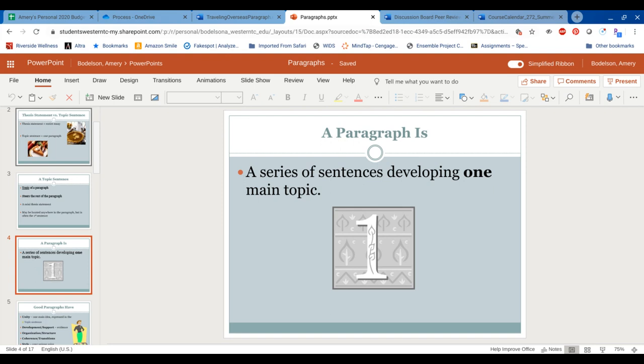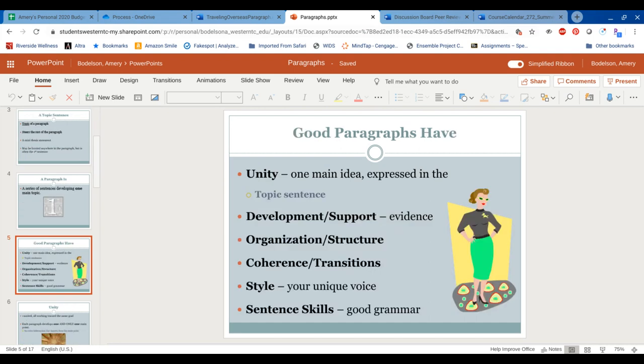So a paragraph is developing one main idea. You don't want to put all of your main ideas or supporting points into one body paragraph because it will get too big, too unwieldy, and your reader will have a harder time following along. So stick with one main idea in each body paragraph. Good body paragraphs have unity, development, organization, transitions or coherence, style, and sentence skills.